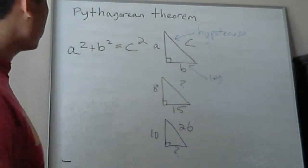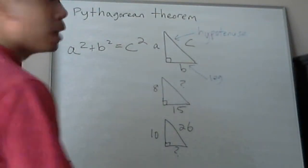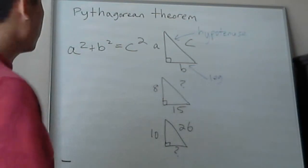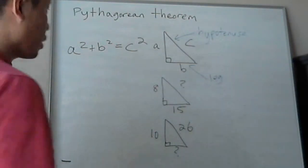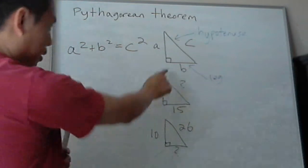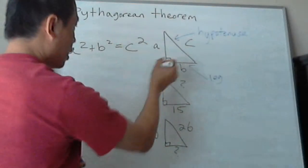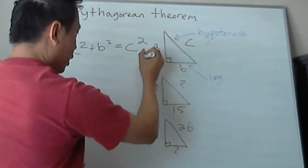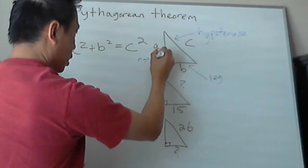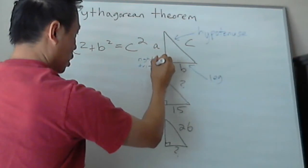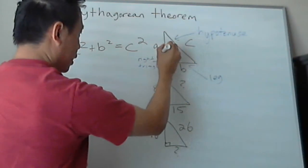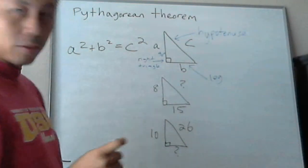So now we're going to talk about the Pythagorean theorem, and this is mainly to solve right triangles only. You see this indicator here? This means right triangle. And it's 90 degrees. That's all you need to know.